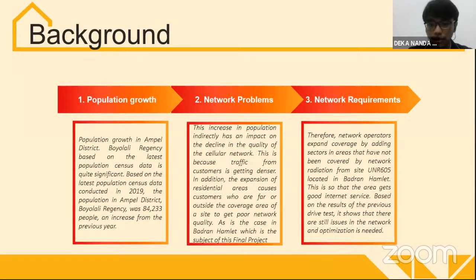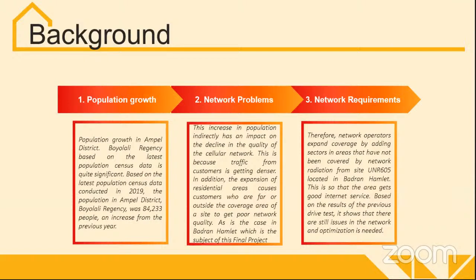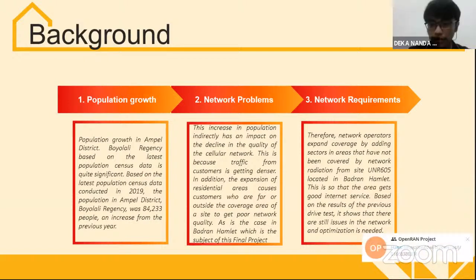In addition, the expansion of residential areas causes customers who are outside the coverage area of a site to get poor network quality, as is the case in Quadrant Hamlet, which is the subject of this final project proposal. Therefore, network operators expand coverage by adding a sector in areas not covered by network radiation from site UNL605, located in Quadrant Hamlet.